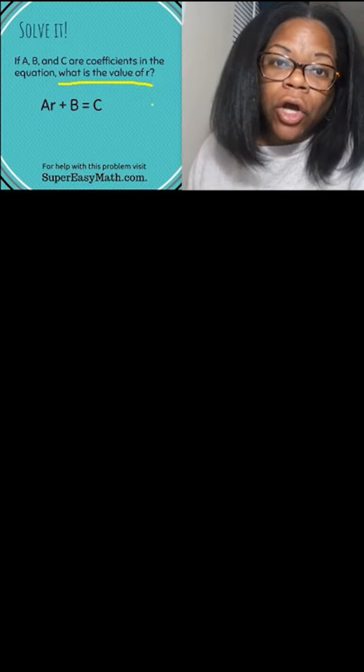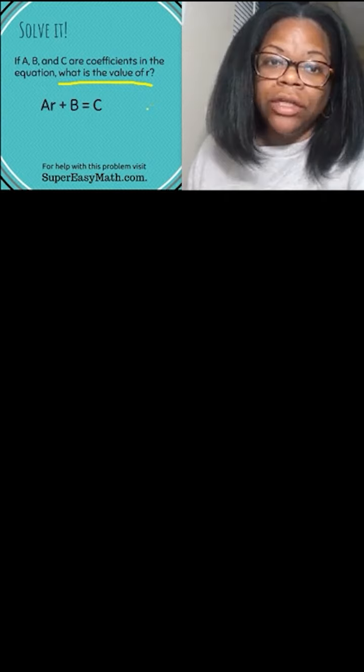Okay. So whenever you solve for a variable, what you need to do is get it by itself on one side of the equal sign and move everything else to the opposite side of the equal sign. But you have certain rules that you need to follow to do that. You have to use order of operations. Order of operations means do the opposite operation of what you see to move that variable or move the thing that you're looking at.